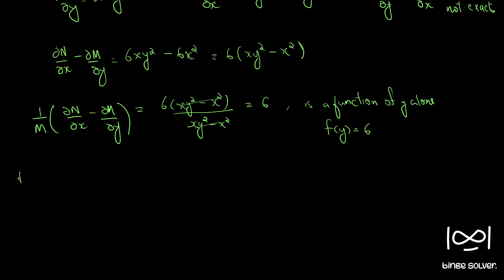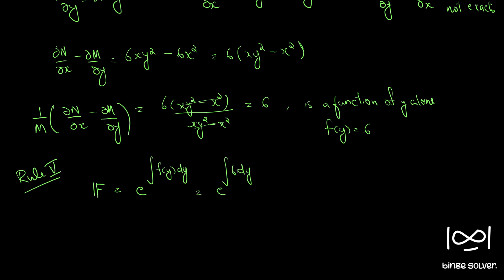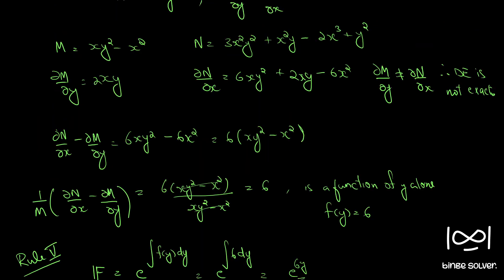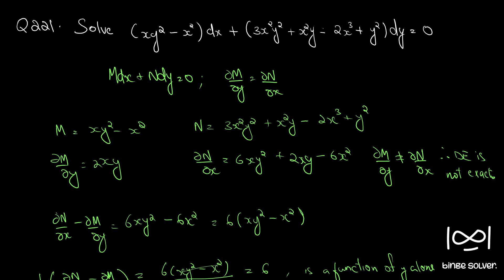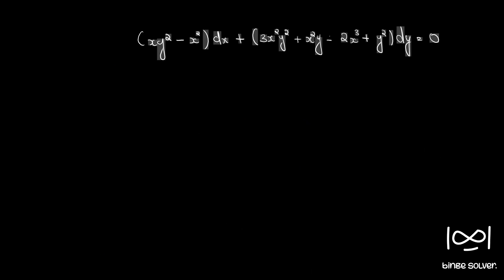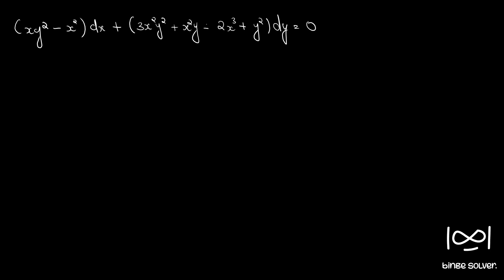Since the result is 6, which is a function of y alone, we call f(y) = 6. By rule 5, the integrating factor is e raised to the integral of f(y) dy, which is e raised to the integral of 6 dy = e^(6y). So our integrating factor is e^(6y).